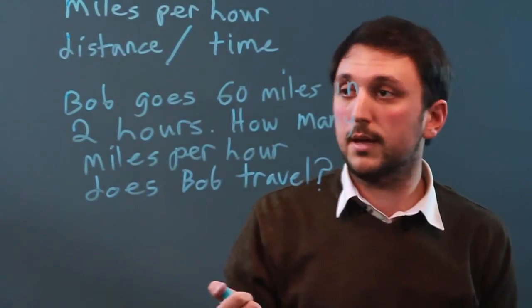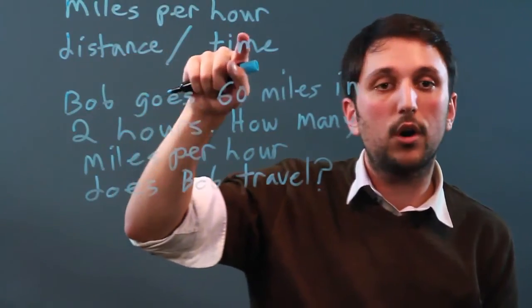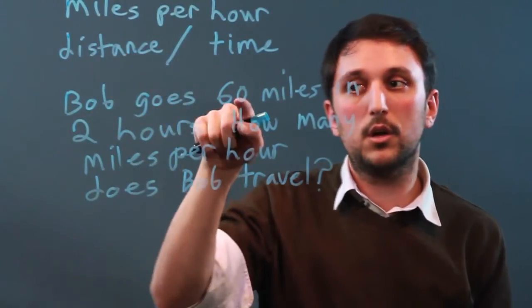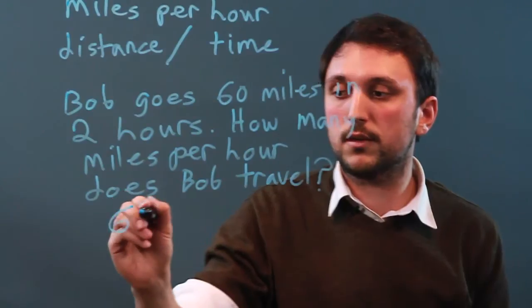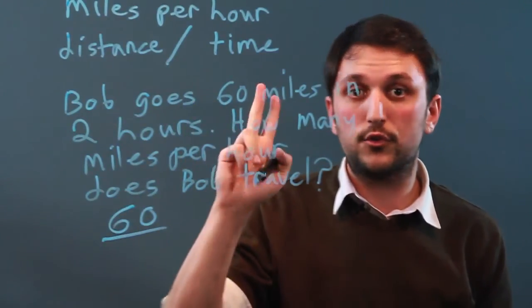So we have to set it up as a fraction. Distance per time. So how far does he go? 60 miles. So 60 over 2.